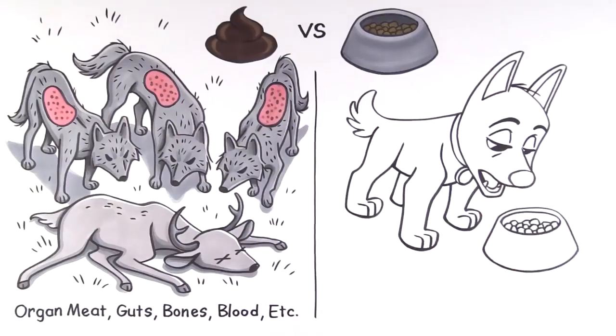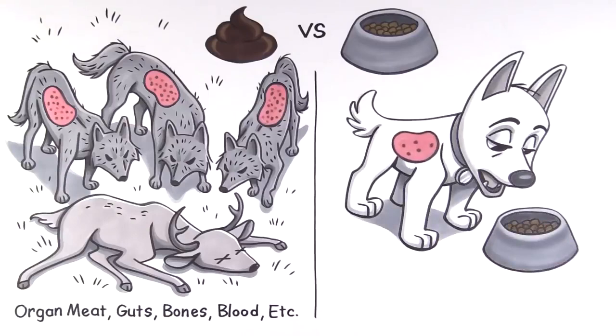Without the key components to digestive health, your dog won't absorb nutrients from their food. So what happens to those undigested nutrients? You guessed it: poop.